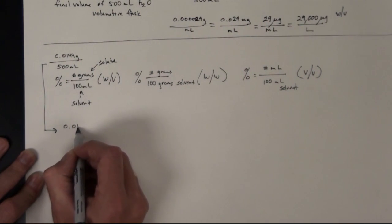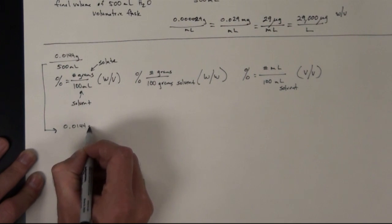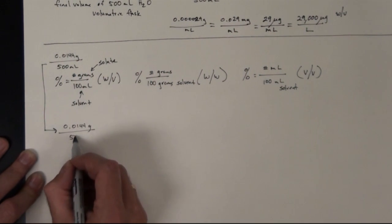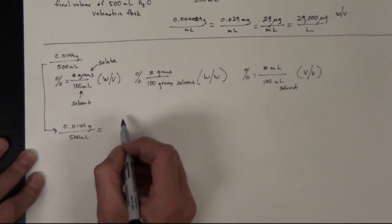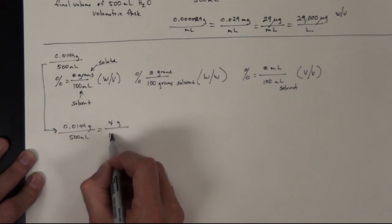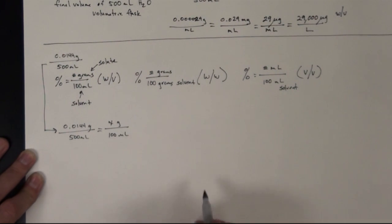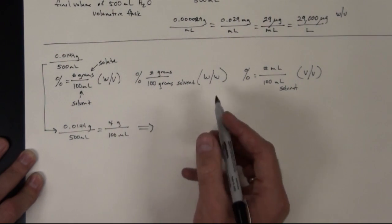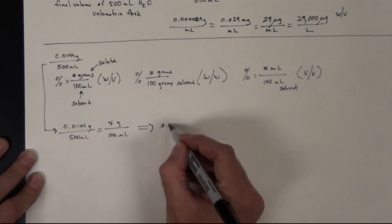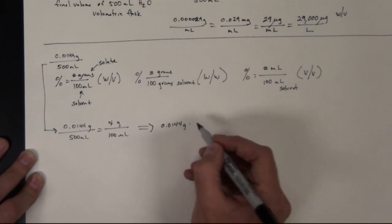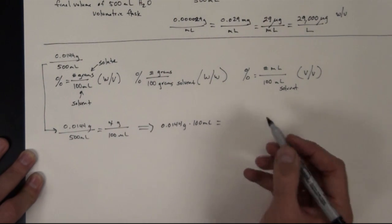So if we know 500 mils contains 0.0144 grams, we can ask the question, how many grams is in 100 milliliters? And so if we do our math, we're going to have 0.0144 grams times 100 milliliters will equal